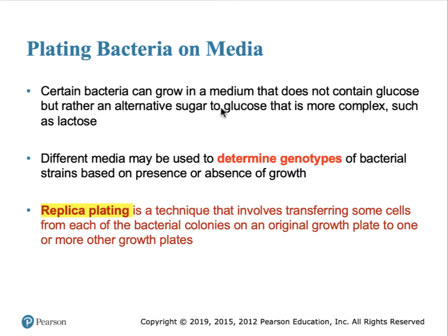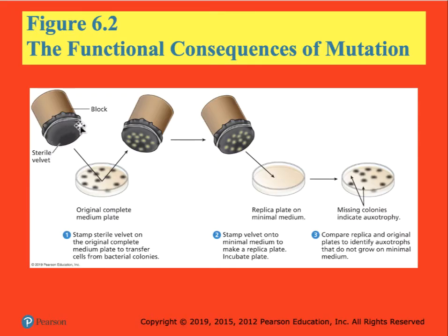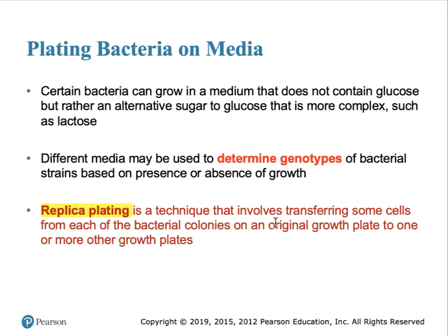Some bacteria can grow on glucose, others on lactose. Bacteria that cannot grow on lactose but do grow on glucose are called lac-minus. One way to identify if a particular colony of bacteria can grow on different media is to replicate a plate — transferring using sterile velvet from the original plate onto new plates containing different types of media. Any colony that doesn't grow on the new plate but did grow on the original would be some type of auxotroph. Replica plating is simply a technique to make copies of the original plate to test for further mutants.